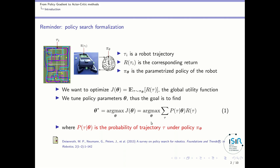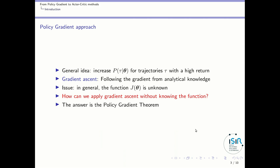This element — the probability of the trajectory given the parameters theta — is something very important in the policy gradient derivation. Once we introduce those probabilities P of tau given theta, the general idea of the policy gradient approach consists in increasing the probabilities of trajectories which give a high return. For that we want to apply gradient ascent, following the gradient of those probabilities from analytical knowledge. The problem is that in general the function relating theta to the global utility function g is unknown, so we cannot apply a gradient directly.